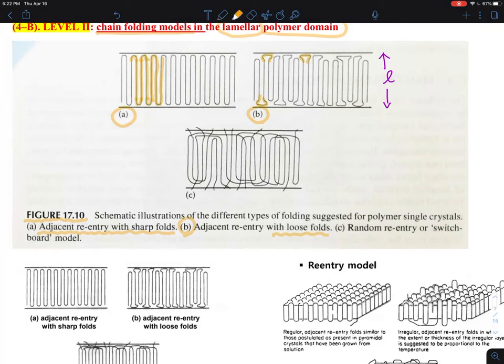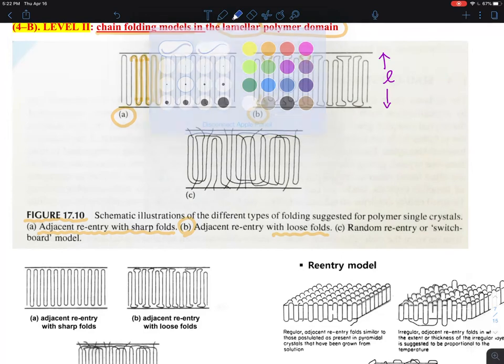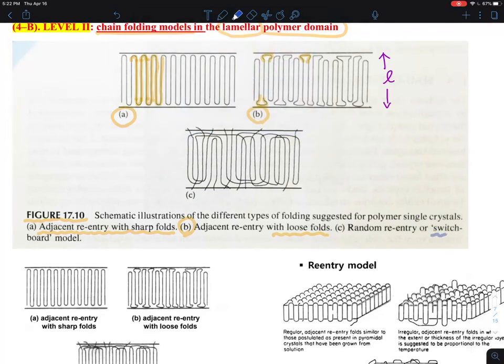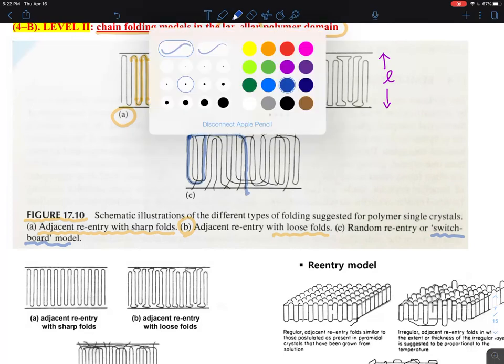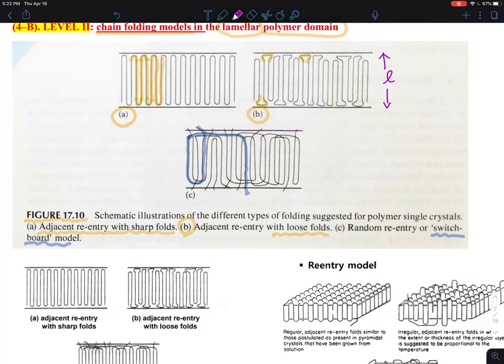The one that is more distinct has its own name called the switchboard model. What about this chain going up? Okay, the chain goes in, but now, not finding the nearest neighbor, it's going across. So this is a lot more random motion compared to the other model. So let's say this one goes in, packing itself, now finding the adjacent one.